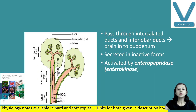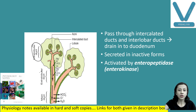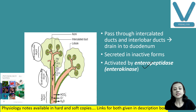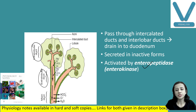The pancreatic secretion passes through intercalated ducts, then intralobular duct, extralobular duct, and then opens into the second part of the duodenum. All these enzymes are secreted in inactive form and get activated by the enzyme enterokinase (enteropeptidase), secreted by the epithelial cells lining of the duodenum. This is a proteolytic enzyme.